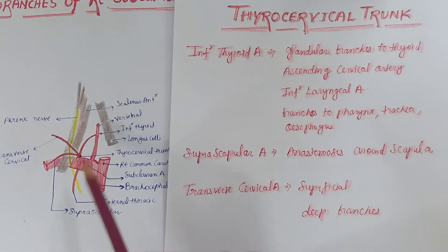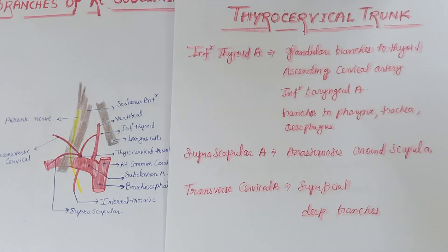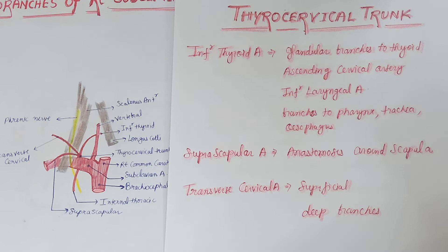The inferior thyroid artery gives glandular branches to the thyroid and gives off the ascending cervical artery, which runs upward in front of the transverse processes of the cervical vertebrae. It also gives the inferior laryngeal artery, which accompanies the recurrent laryngeal nerve and enters the larynx deep to the lower border of the inferior constrictor, plus other branches supplying the pharynx, esophagus, and surrounding muscles.